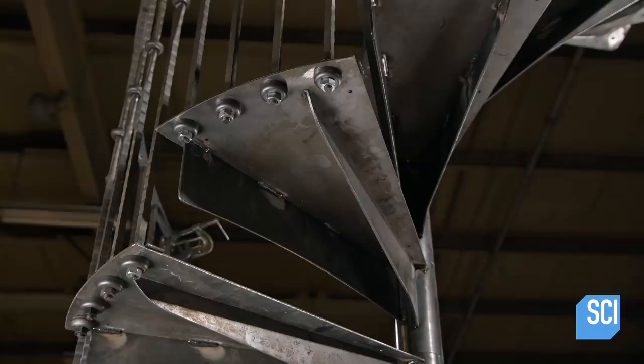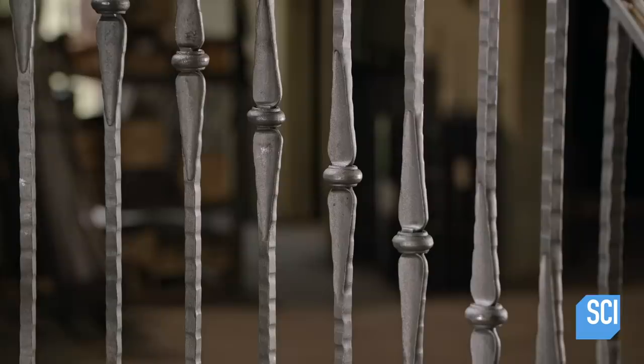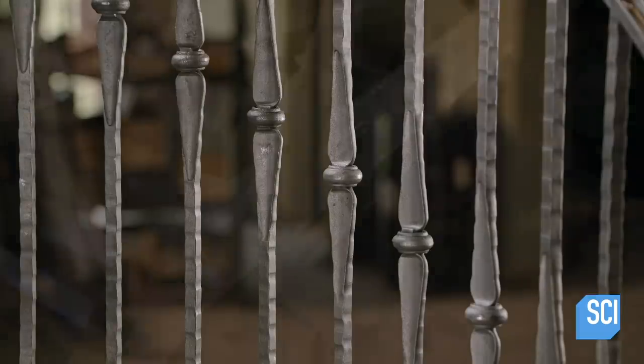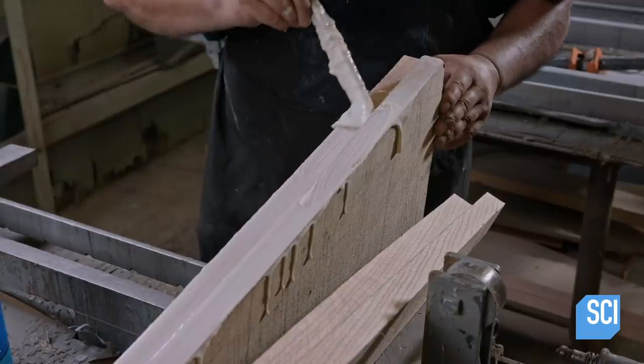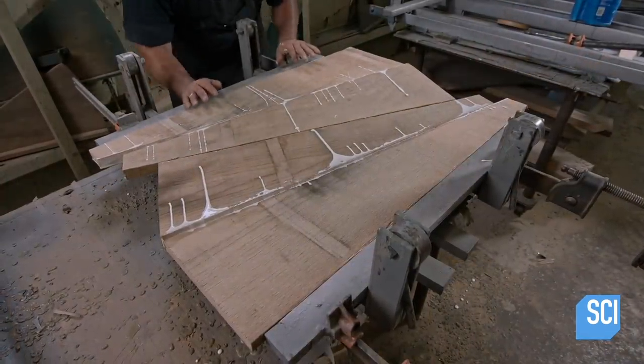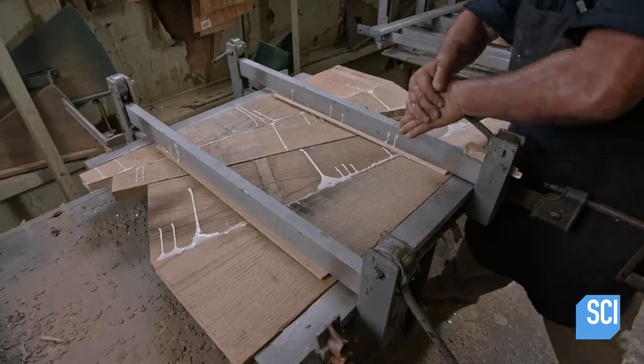The spiral staircase's metal structure is now complete. It's ready for the wooden accents. A worker applies glue to pieces of red oak. He'll use two of them to make one stair tread. He clamps two tread sets in a fixture while the glue sets. He inserts a shim and tightens the clamp to apply downward pressure.